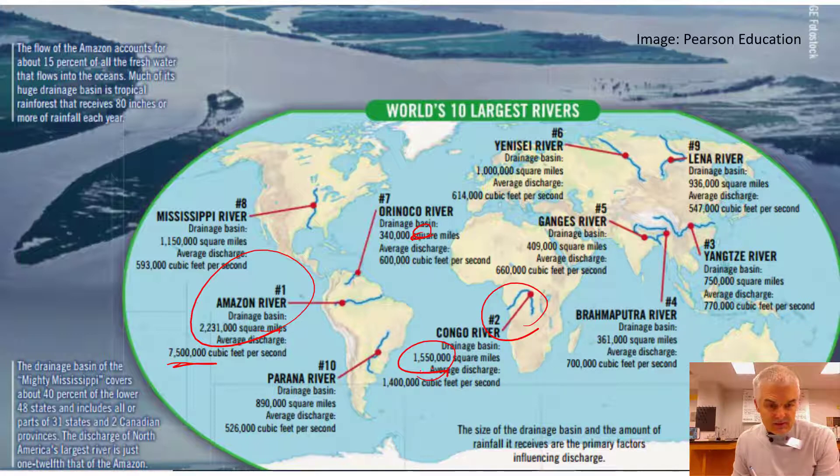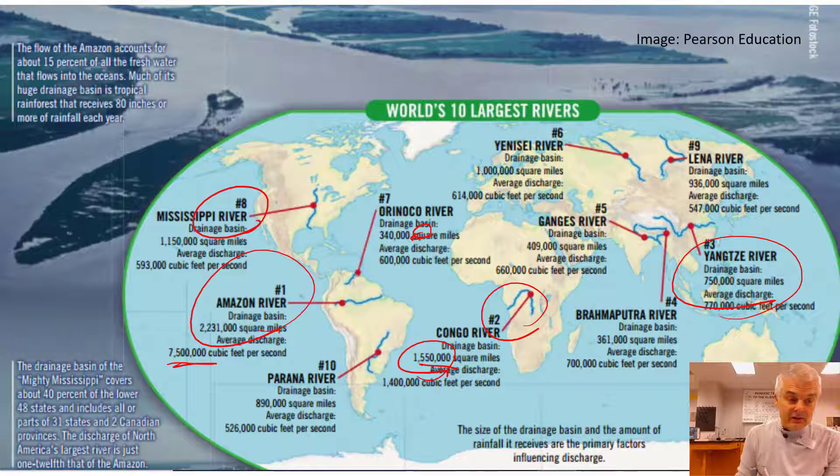That's interesting. We don't think about this one, but look at the number. This is 7 million. This is only 1.5 million. This is just crazy, the number of differences. The Yangtze River in China is next. And the Mississippi River, the one that we're close to, it seems like a huge river. And it is. It's only 593,000 versus 7 million. This is just crazy.